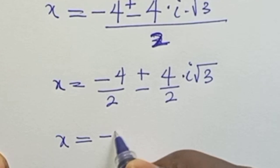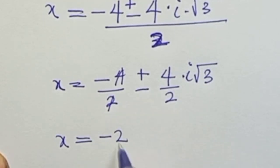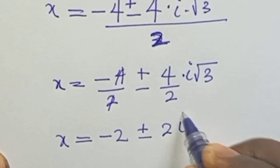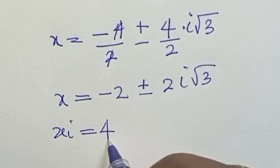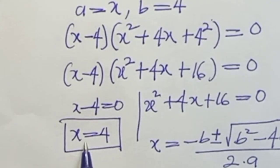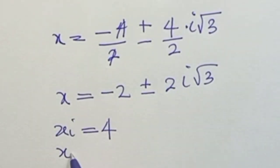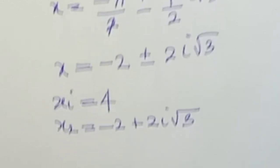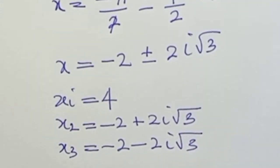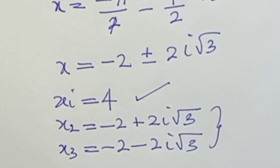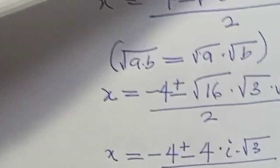Simplifying: s equals negative 4 over 2 plus or minus 4 over 2 times i square root of 3, which gives s equals negative 2 plus or minus 2i square root of 3. So the three values of s are: s1 equals 4, s2 equals negative 2 plus 2i square root of 3, and s3 equals negative 2 minus 2i square root of 3. Here s equals 4 is the real value, while the other two are complex numbers. Thank you for staying to the end — ensure to subscribe and follow for more. Bye!